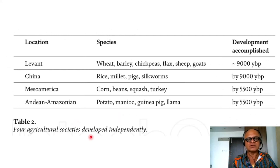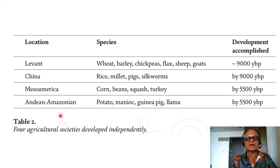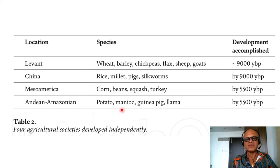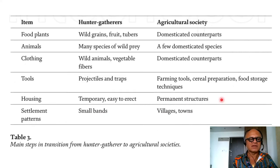Looking at four agricultural societies that developed independently: Levant, China, Mesoamerica, and Andean-Amazonian. From the Levant — wheat, barley, chickpeas, flax, sheep, and goats by 9,000 years before present. China — rice, millet, pigs, and silkworms by 9,000 years before present, with the famous silk route in more recent times. Mesoamerica — corn, bean, squash, and turkey by 5,500 years before present. Andean-Amazonian — potatoes, manioc, guinea pig, and llama by 5,500 years before present.